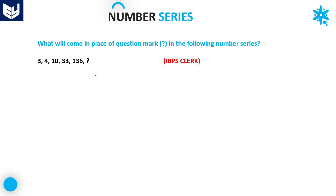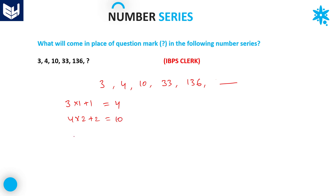Let's go to the first question. The numbers given in this series are: 3, 4, 10, 33, 136, and a question mark. If you observe, from 3 to 4: 3 × 1 + 1 = 4. Next, 4 × 2 + 2 = 10. Next, 10 × 3 + 3 = 33. Next, 33 × 4 + 4 = 136. So the next number should be 136 × 5 + 5.